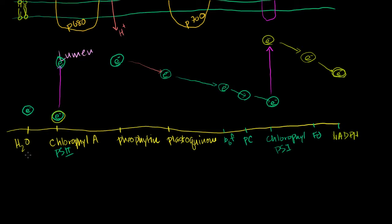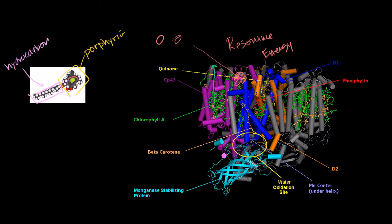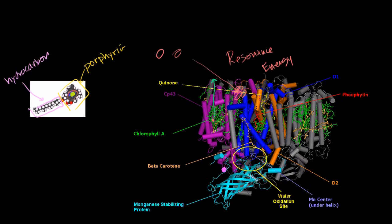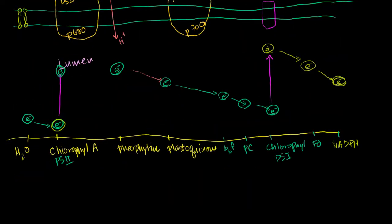The question is, what replaces this electron? And that's where that amazing thing happens — water gets oxidized. Oxidizing is losing electrons — OIL RIG. So water gets oxidized by the water oxidation site on photosystem II. And that electron ends up and replaces the electron in the chlorophyll.